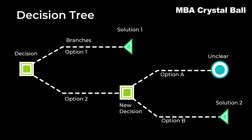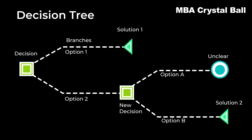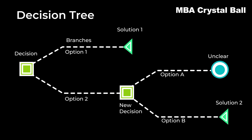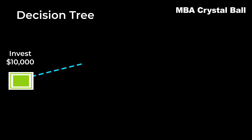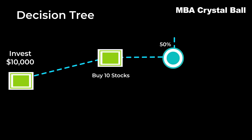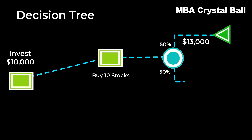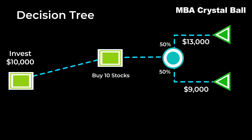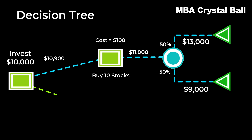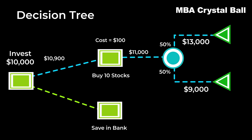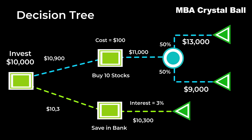Like an issue tree, a decision tree is exhaustive in its inclusion of decisions, outcomes, options, and scenarios. A user looks at each and chooses the best option. For example, the specific decision is to invest $10,000. The first option is to buy 10 stocks — five may give a return of $13,000 and the remaining five $9,000, for an average return of $11,000 minus $100 for costs. The second option is to invest in a bank at 3% interest for a return of $10,300. The decision becomes easier since the branches tell you what to expect from each choice.